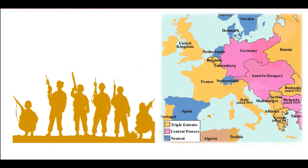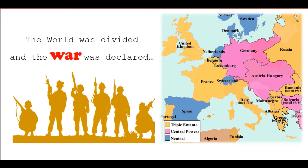With this, the world soon got divided and the war was declared. On one side there were Allied powers like UK, France, and Russia — shown in yellow on the map. The second group was the Central or Axis powers like Germany and Austria-Hungary, highlighted in pink on the map.